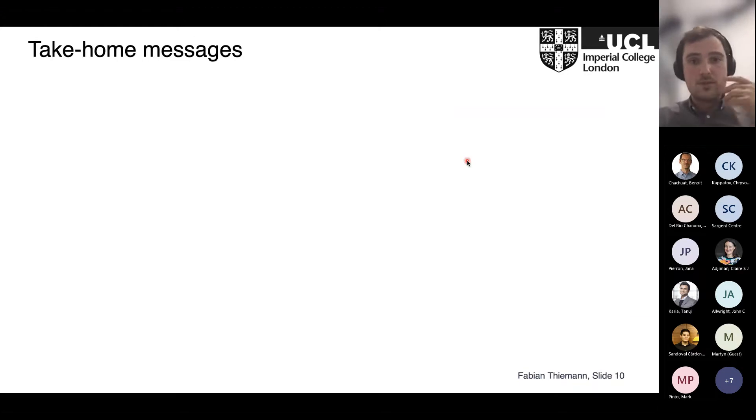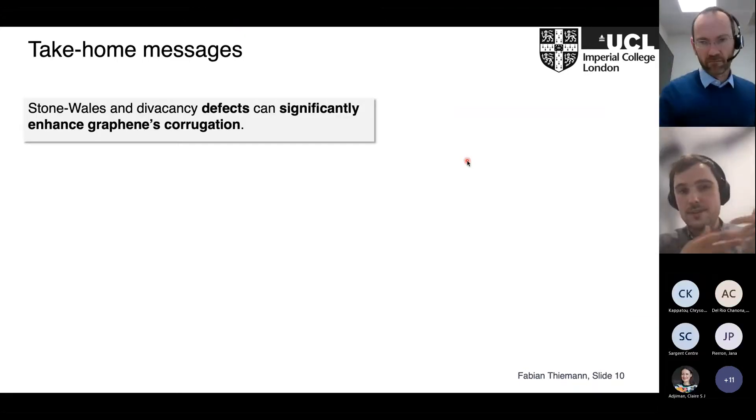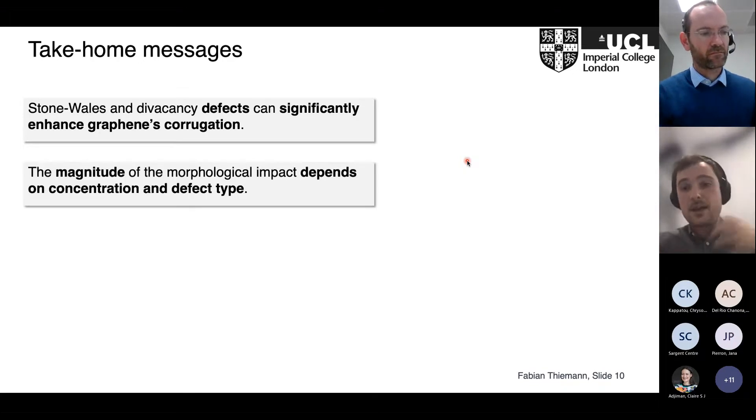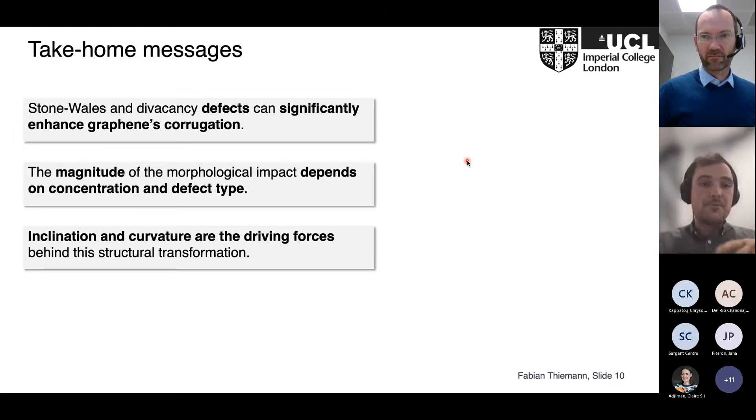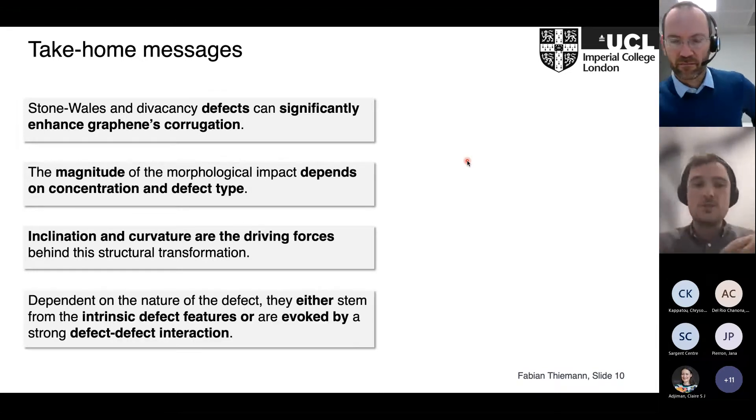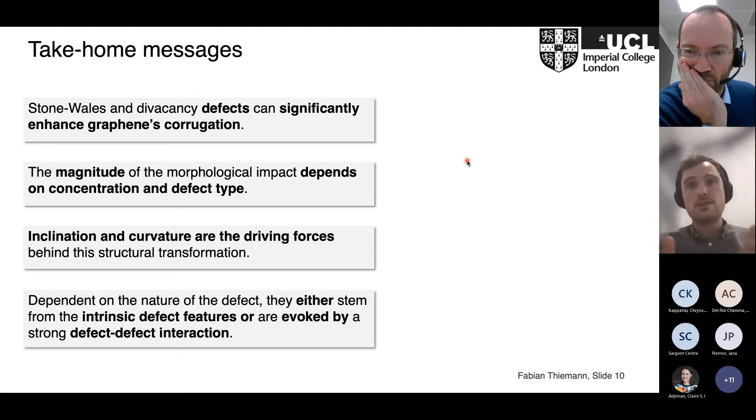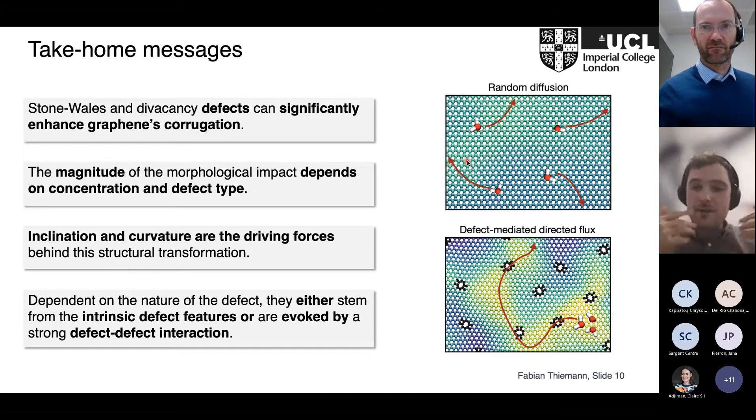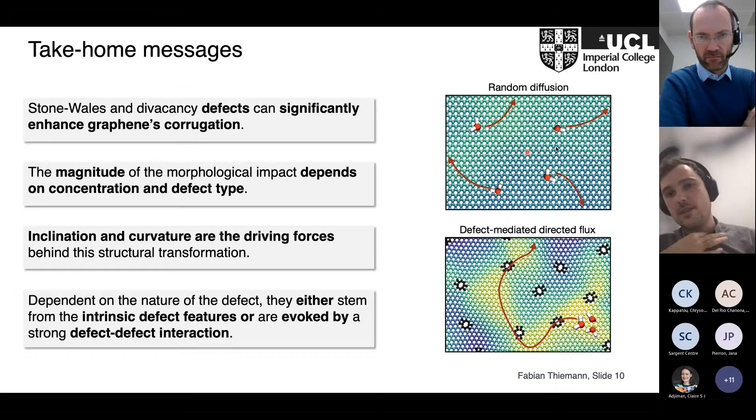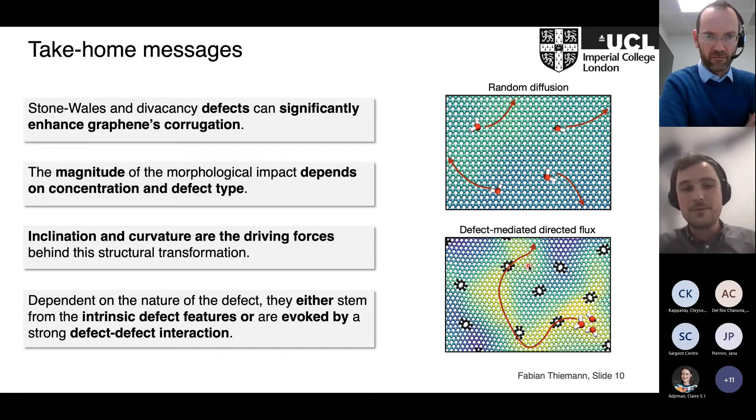Just to conclude what I told you today: First of all, Stone-Wales and divacancy defects can significantly enhance graphene's corrugation. The magnitude of the morphological impact depends on concentration and defect type. Inclination and curvature are the driving forces behind this structural transformation. Dependent on the nature of the defect, they either stem from the intrinsic defect features or are evoked by a strong defect-defect interaction. This could be very interesting—I still want to show this is a bit blue-sky—but we can think about water diffusing on nanofluidic devices. On pristine graphene this is all very random, but we could think about using defects to tailor and have static rippling to form channels where we have defect-mediated directed flux of water molecules on the nanoscale.